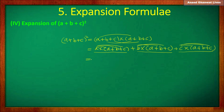Expanding: a into a is a², a into b is ab, a into c is ac. Then b into a is ab, b into b is b², b into c is bc. Then c into a is ac, c into b is bc, and c into c is c².